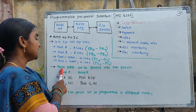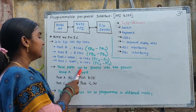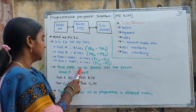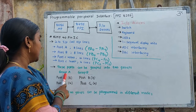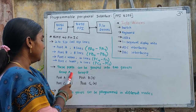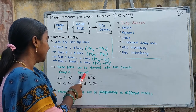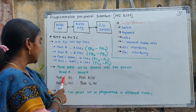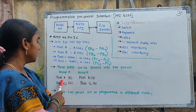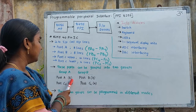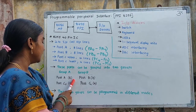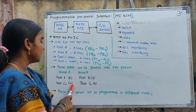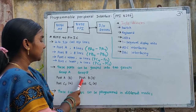These ports can be grouped into 2 groups: Group A and Group B. Group A consists of port A with 8 lines and port C upper with 4 lines. Group B consists of port B and port C lower with 4 lines.